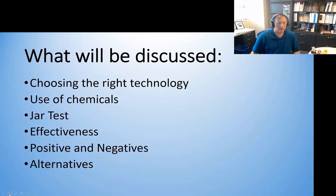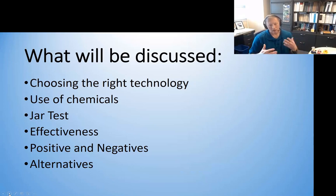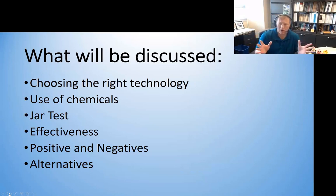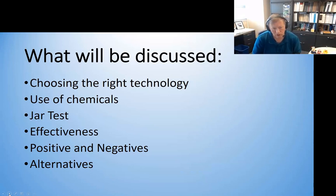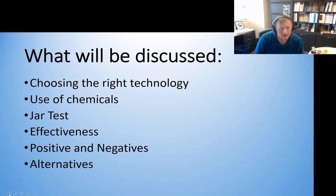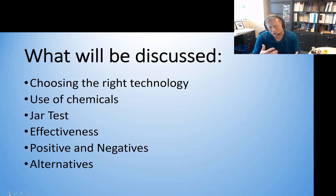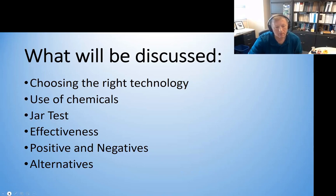Over the next few minutes I'll cover how do we choose the right technology. I just want to spend a little bit of time on that. The use of chemicals — we're going to spend a lot of time on chemicals for this particular technology because this is the area that has the biggest impact on how effective your system is going to be when using these geotextile bags. I'll also show you an illustration of a jar test, look at some results of a few studies, the pluses and minuses of using this technology, and some alternatives that put a little twist on the geotextile bag concept.